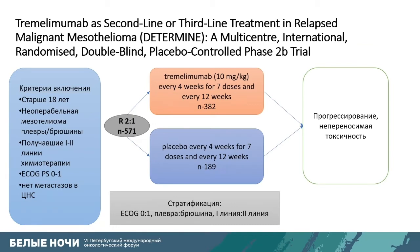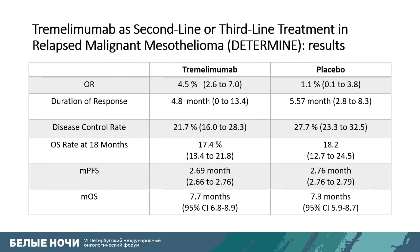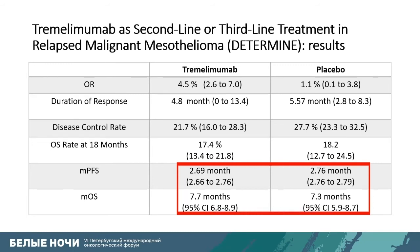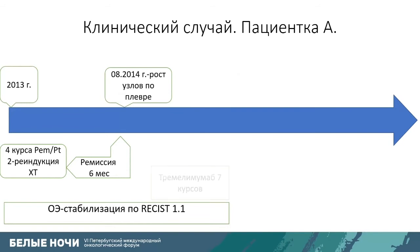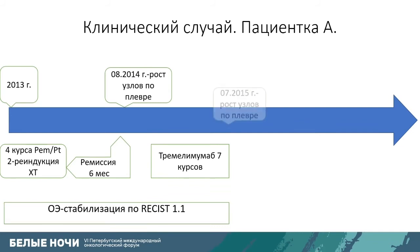A clinical trial was used for her second and third line of treatment of pleural and abdominal mesothelioma. This was a placebo-controlled trial. Survival without progression did not improve, and overall survival in the tremelimumab group was the same as in the placebo group. Our patient received tremelimumab for seven courses with stabilization within one year, and then progression occurred in July 2015.